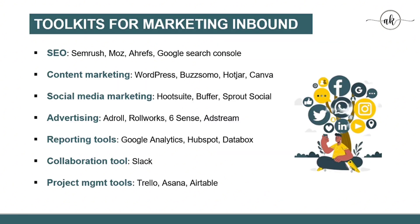For SEO, some popular tools are SEMrush, Moz, Ahrefs, and Google Search Console. For content marketing tools, popular options include WordPress, BuzzSumo, Hotjar, and Canva. For social media marketing, Hootsuite, Buffer, and Sprout Social are there to help you. Advertising tools include AdRoll, RollWorks, 6sense, and AdStream. Reporting tools include Google Analytics, HubSpot, and Databox. For collaboration you can use Slack, and for project management tools you can use Trello, Asana, and Airtable.